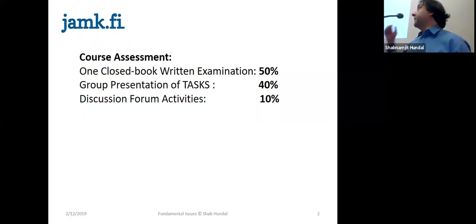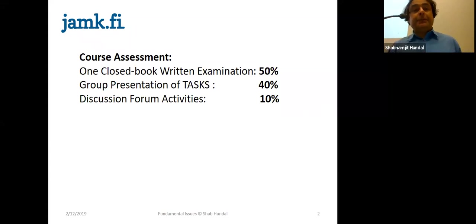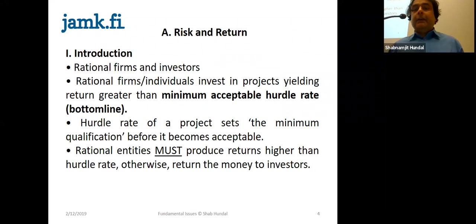I explained already to you that your course assessment is based on three things. Your 50% is your closed book exam, and 40% is your group presentation — you come as a group. And then your 10% is the activities that you do on the discussion forum. The first topic is risk and return.